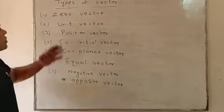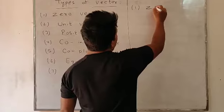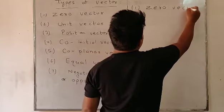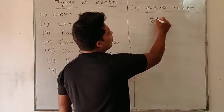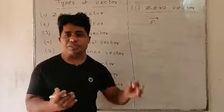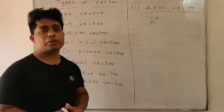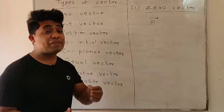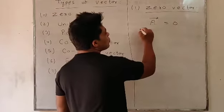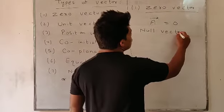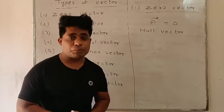Let's start with the first type: zero vector. Suppose A is a vector quantity, represented by an arrow — the arrow indicates that a particular physical quantity is a vector. Zero vector refers to those vector quantities that have zero magnitude. It is also called a null vector — it has zero magnitude.